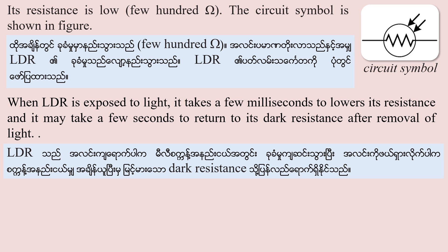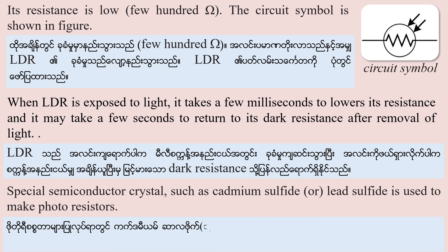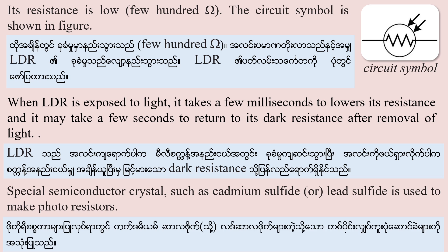A special semiconductor crystal — cadmium sulfide — is used to make a photoresistor. This is the material used to make the LDR, also called a photoresistor.